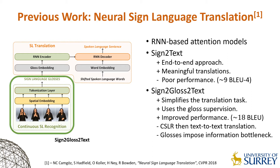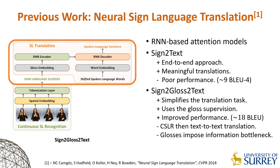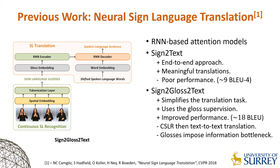We used the state-of-the-art CSLR model as a sign-to-gloss step, which required gloss-level supervision. Then, we realized SLT using a text-to-text translation model by mapping sign-gloss sequences to spoken language sentences. This approach significantly improved the translation performance. However, it imposed an information bottleneck, as glosses are incomplete text-based representations of multichannel visual signs.